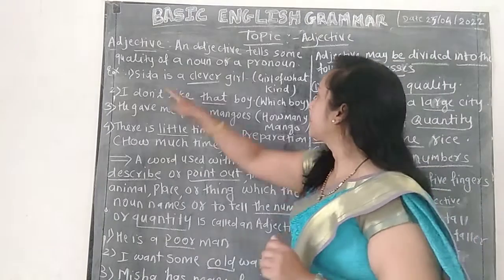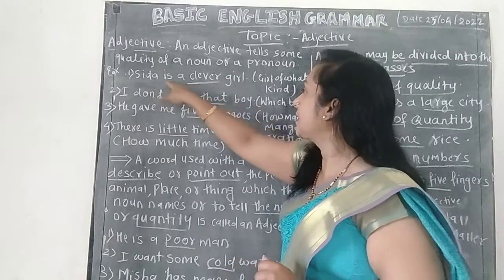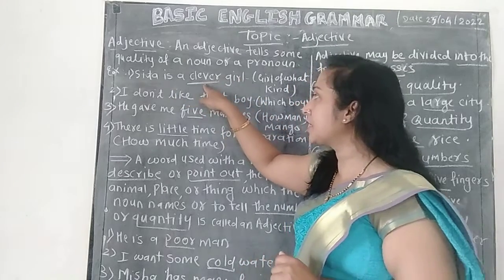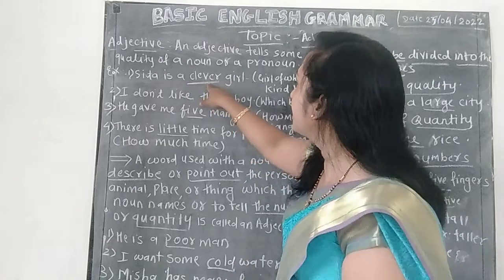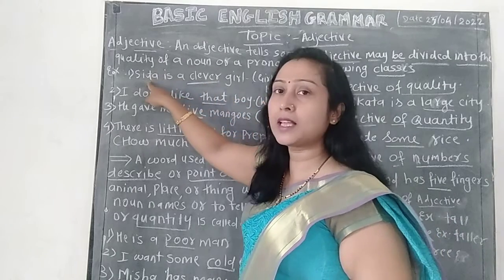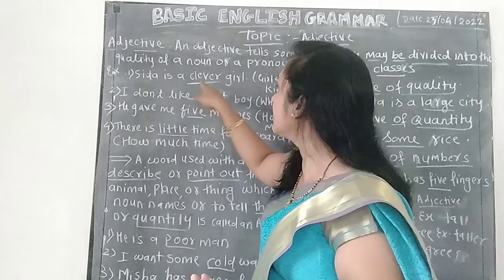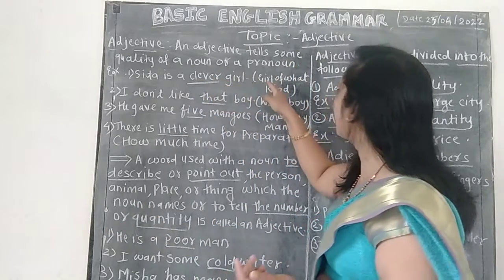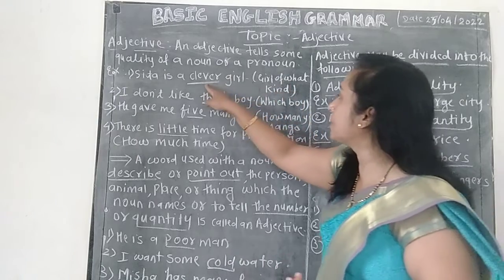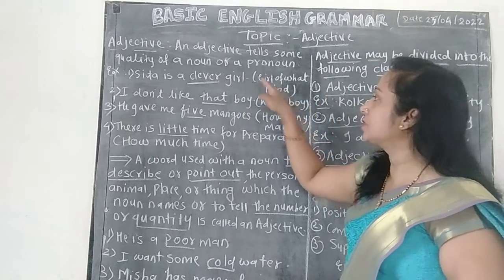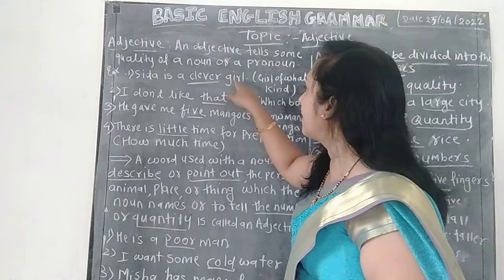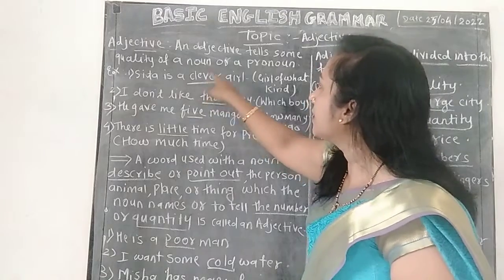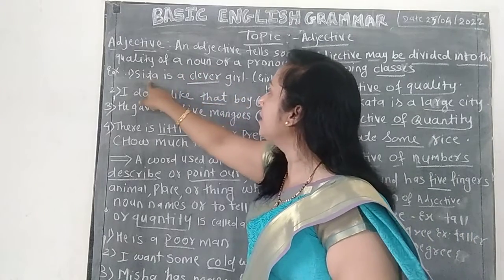Take an example: Sita is a clever girl. In this sentence, 'clever' is the adjective. Clever gives information about Sita — what kind of girl is Sita? Clever. Girl of what kind? Clever. So in this sentence, 'clever' is the adjective. Clever tells the quality of a noun.